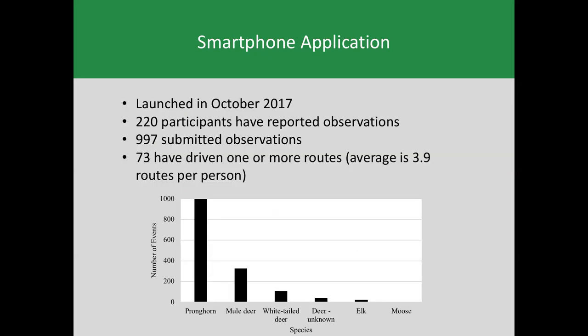These are some preliminary results. Pronghorn Crossing was launched in 2017, and there have been 220 participants reporting observations with just under a thousand observations. We've had people participating in these driving routes, which is great, and the observations are predominantly pronghorn.